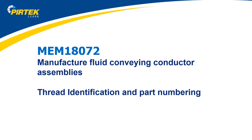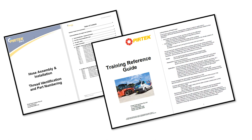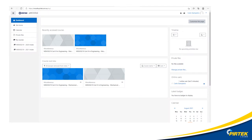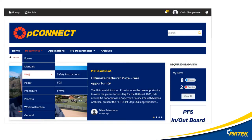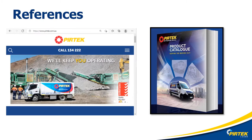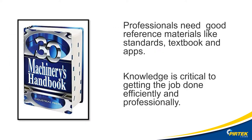Welcome to MEM 18072 Thread Identification and Part Numbering. This lecture is complementary to the PERTEC Thread Identification and Part Numbering Training Reference Guide publications. All supporting material mentioned in this lecture can be downloaded from P-Moodle. Plenty of useful information is available to you as a technician from P-Connect. Latest parts catalogues are available at www.pertec.com.au. Other valuable references include the Machinery's Handbook.